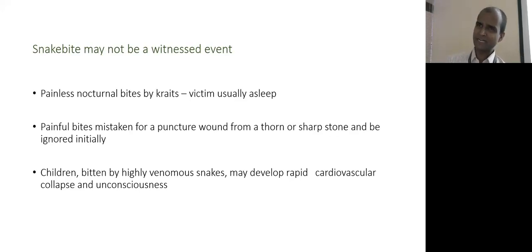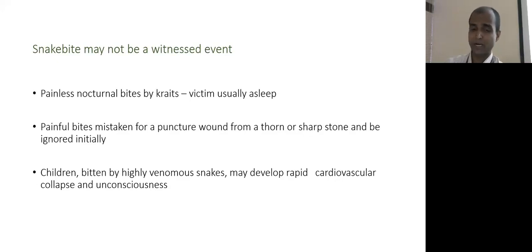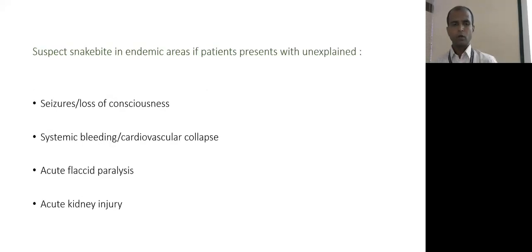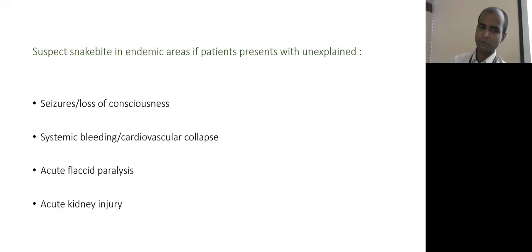Snake bite may not be a witnessed event. Kraits cause painless nocturnal bites while victims sleep; painful bites may be mistaken for puncture wounds from thorns. Children bitten by highly venomous snakes may develop rapid cardiovascular collapse and unconsciousness. In endemic areas, unexplained symptoms like seizures, loss of consciousness, systemic bleeding, cardiovascular collapse, acute flaccid paralysis, or acute kidney injury should always include snake bite in the differential diagnosis.